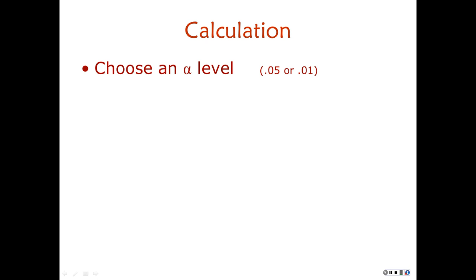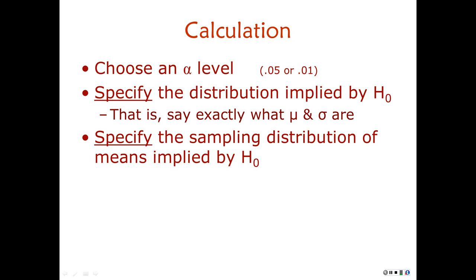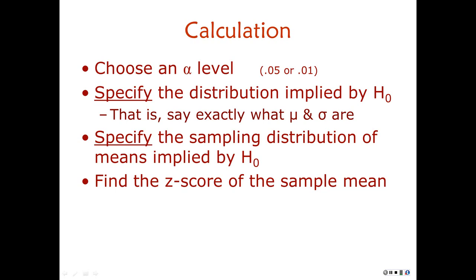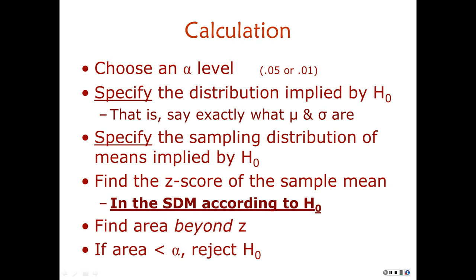The calculation is really similar to a confidence interval — you're just calculating a z-score. Choose an alpha level, 0.05 or 0.01 almost all the time. Specify the distribution implied by the null hypothesis — write down the mean and standard deviation. Specify the sampling distribution of means implied by the null hypothesis and your sample size, meaning the standard error of the mean. Find the z-score of your sample mean in that sampling distribution. Then find the area beyond that z in one or two tails depending on your question. If that area — the P value — is less than alpha, you reject the null hypothesis.